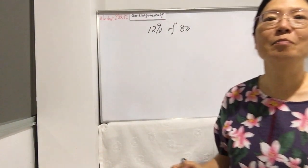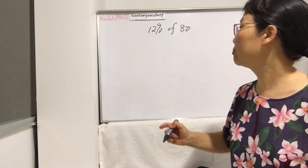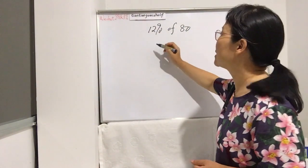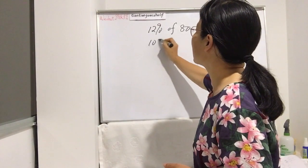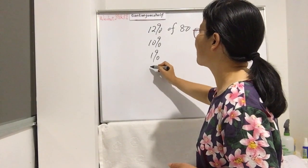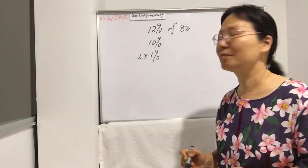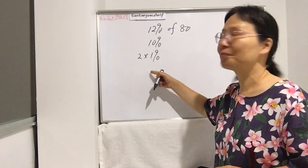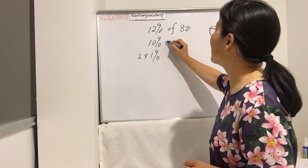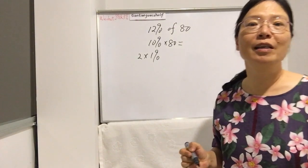Use this simple example to let you master this skill. 12%, we can see, is 10% plus two times 1%. That's the trick here. 10% of 80 is very easy, you can work out is 8.